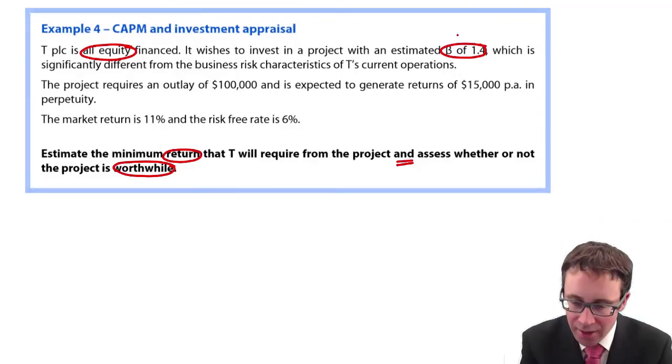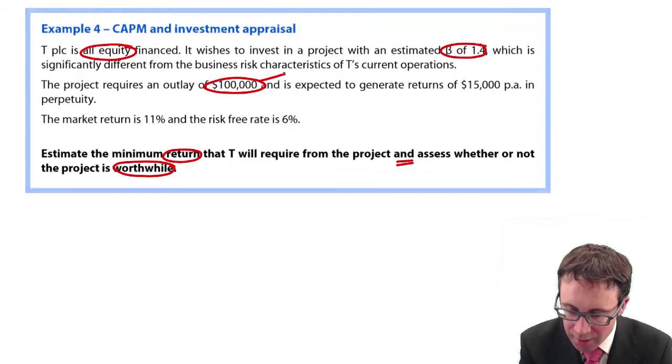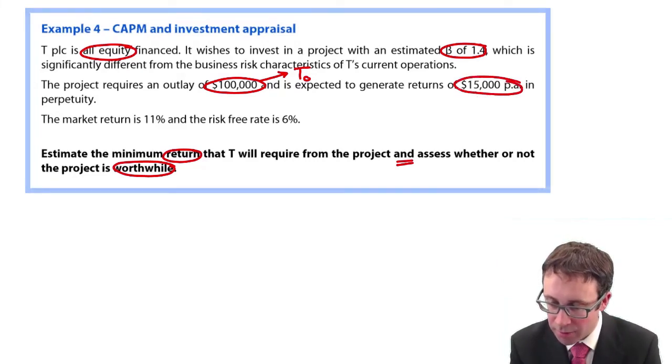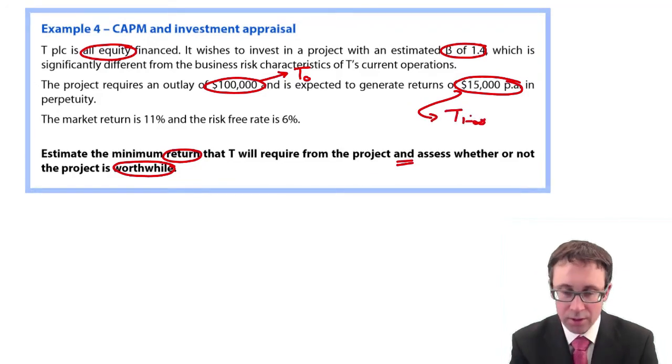The project requires an outlay of $100,000. So that's going to be there at T0, which generates returns of $15,000 per annum in perpetuity. So that's there from T1 to infinity.